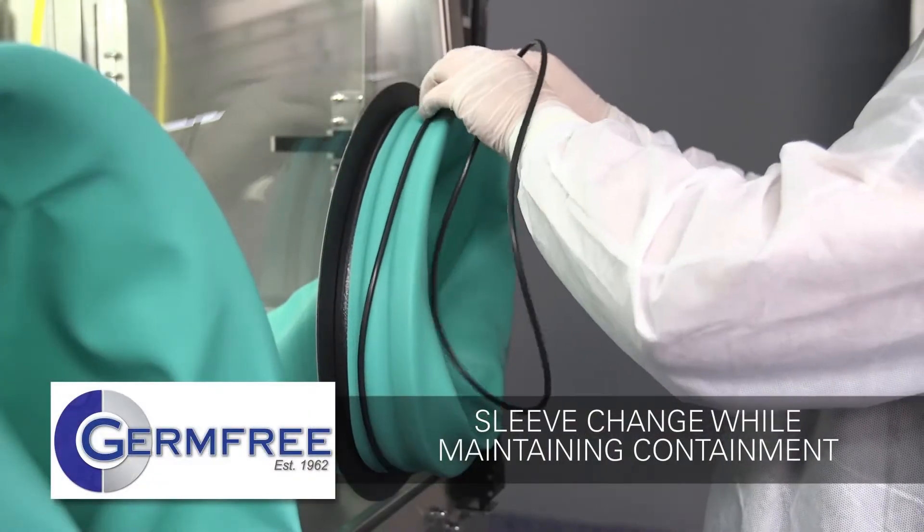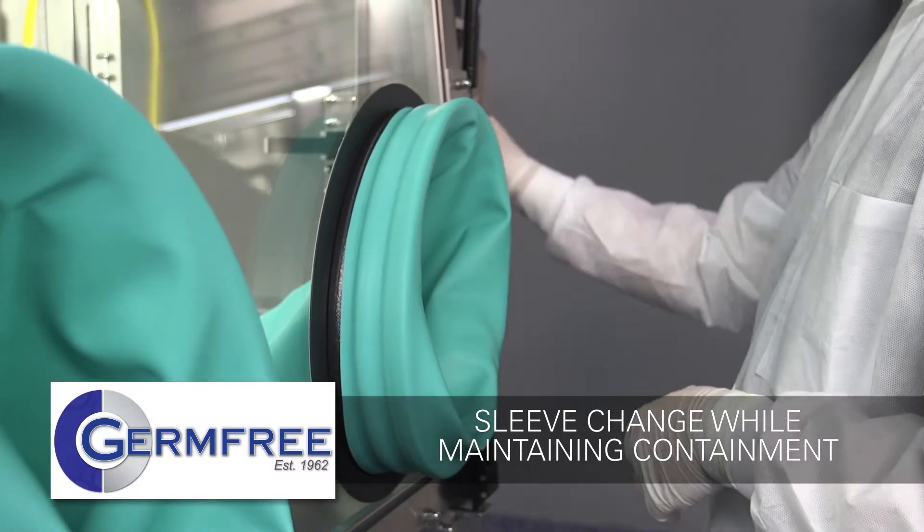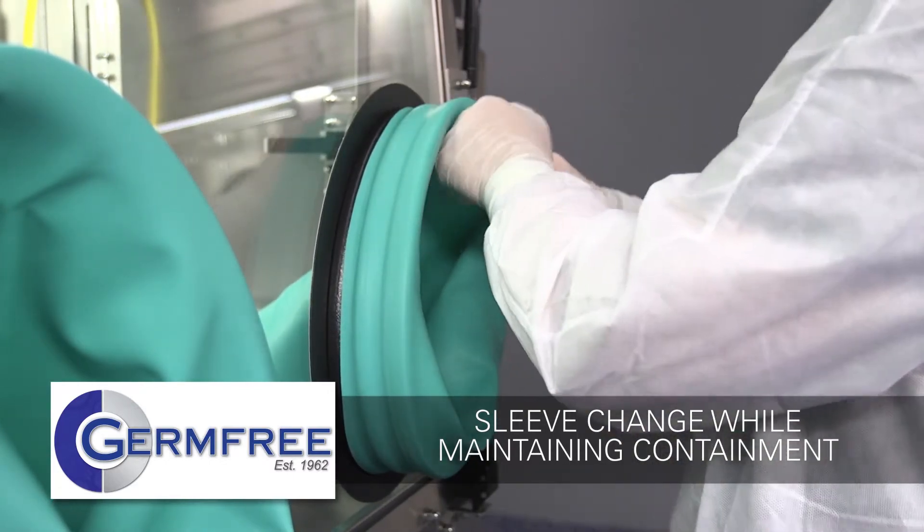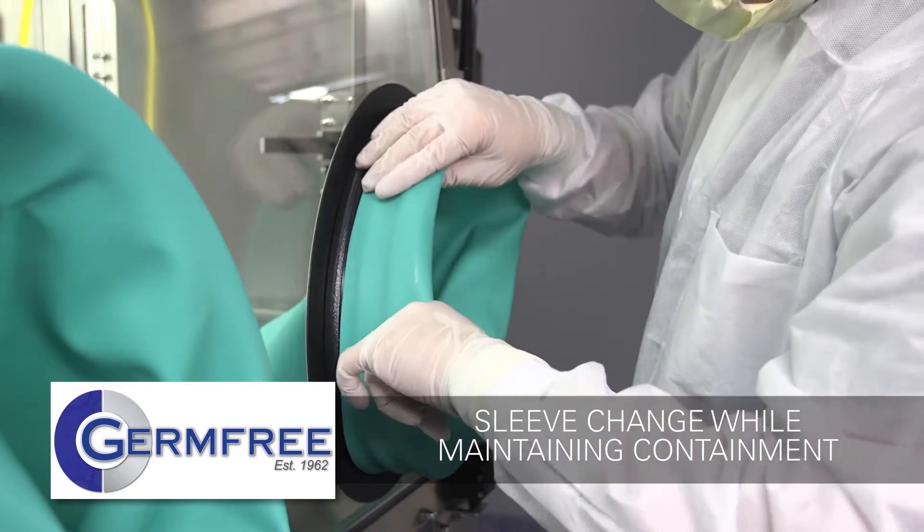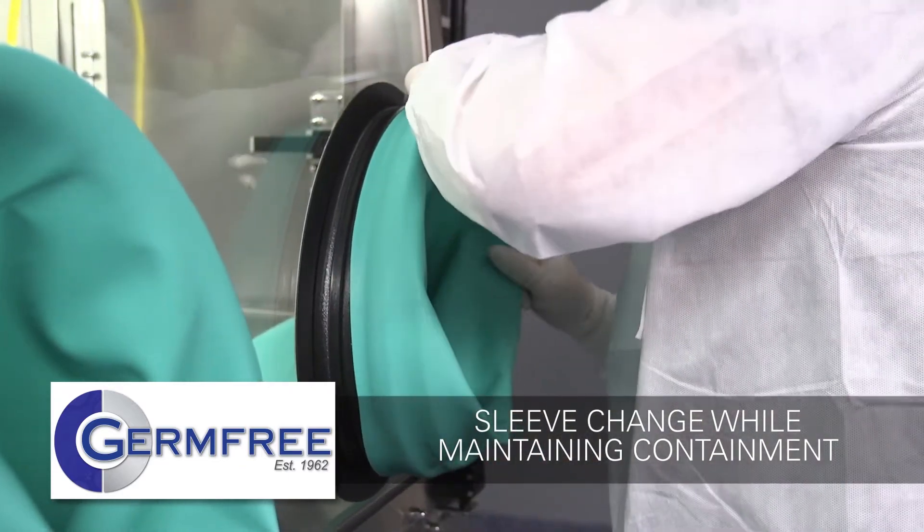If you were to tear a sleeve during operation, it can also be replaced without breaking containment. First, remove the O-ring and move the sleeve to the outermost glove port groove.